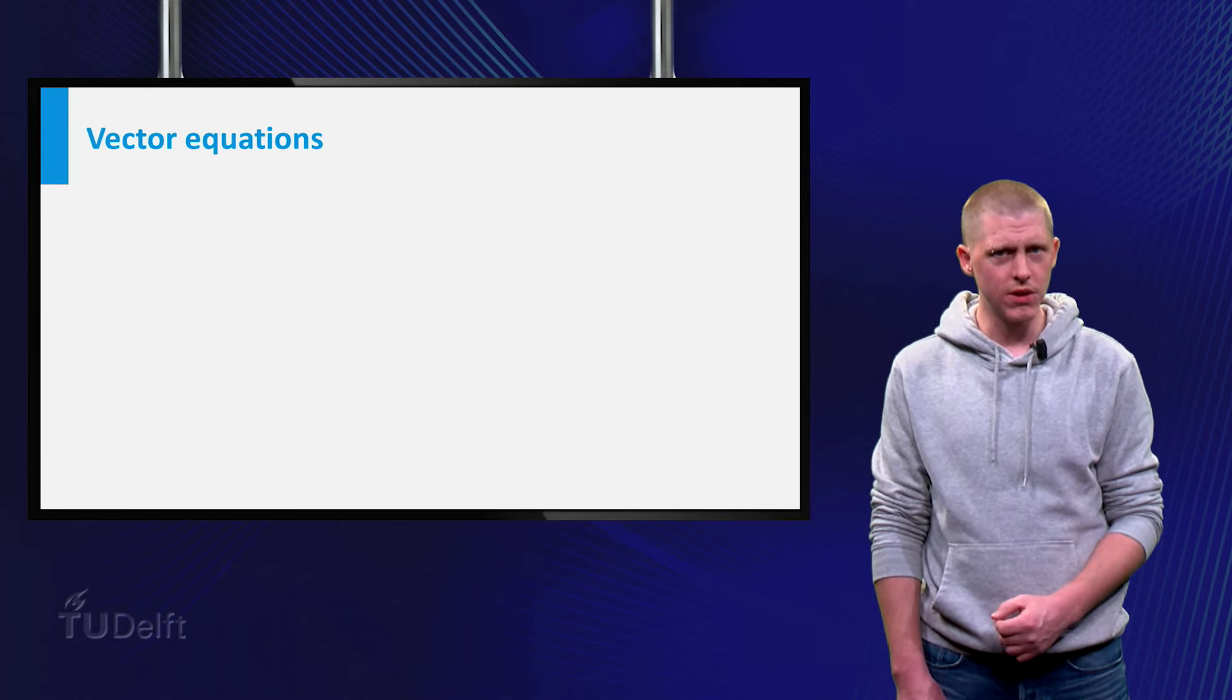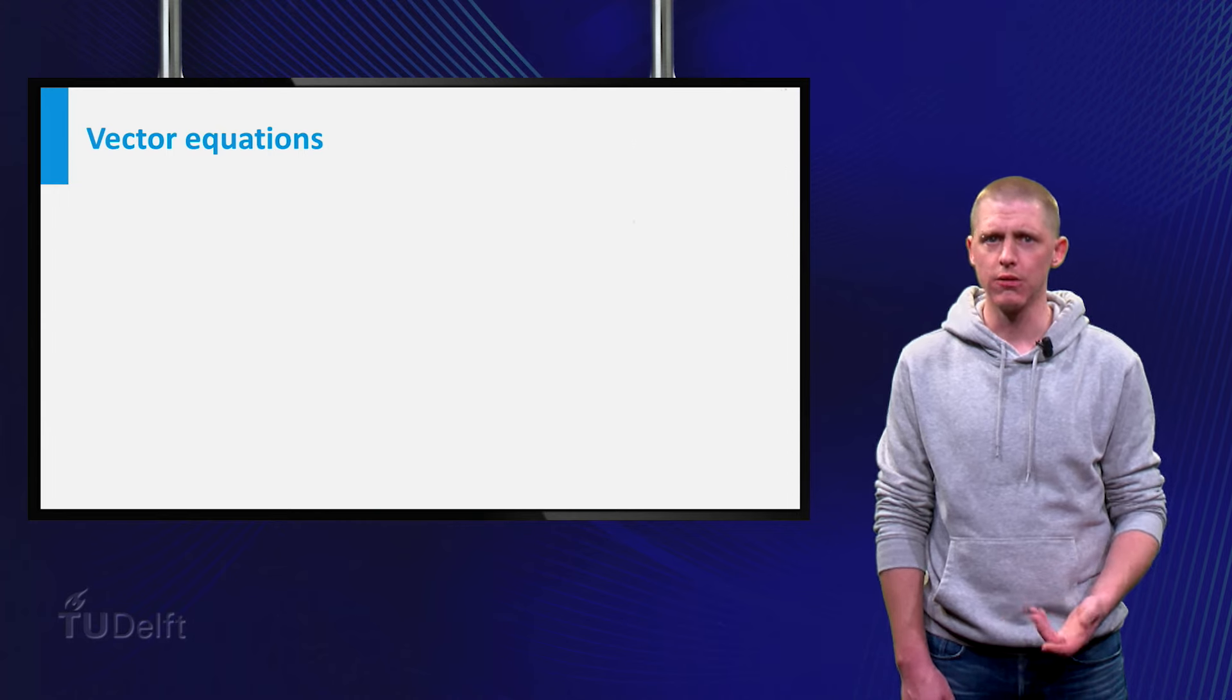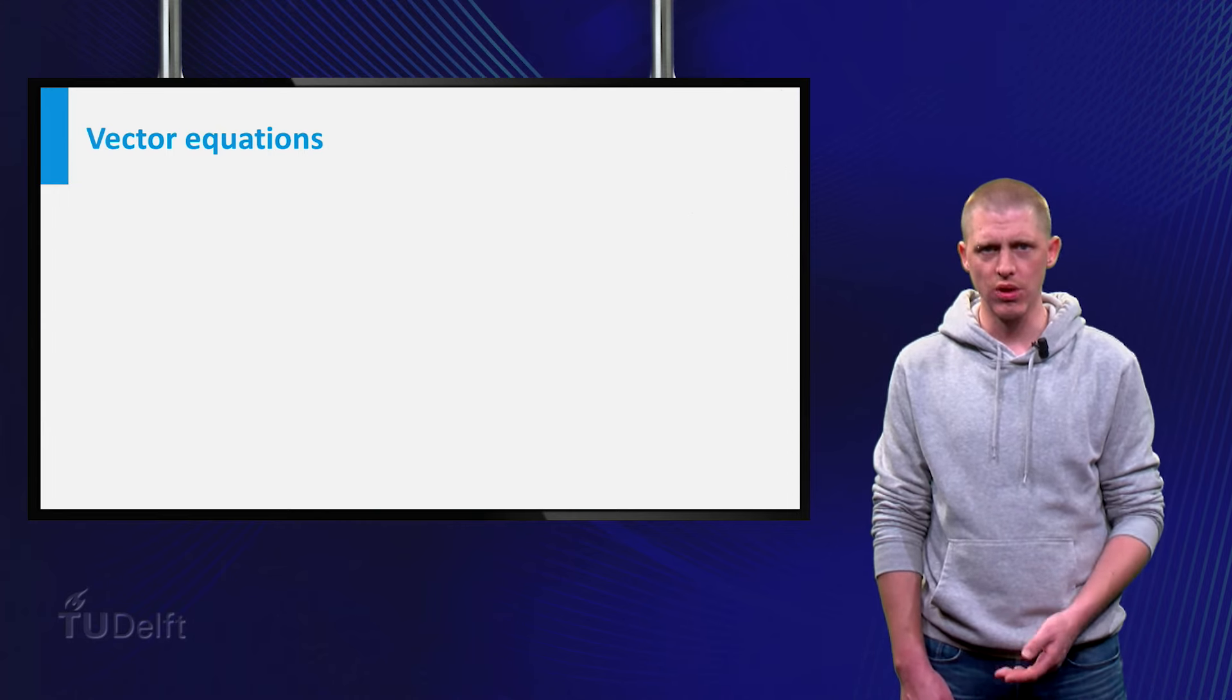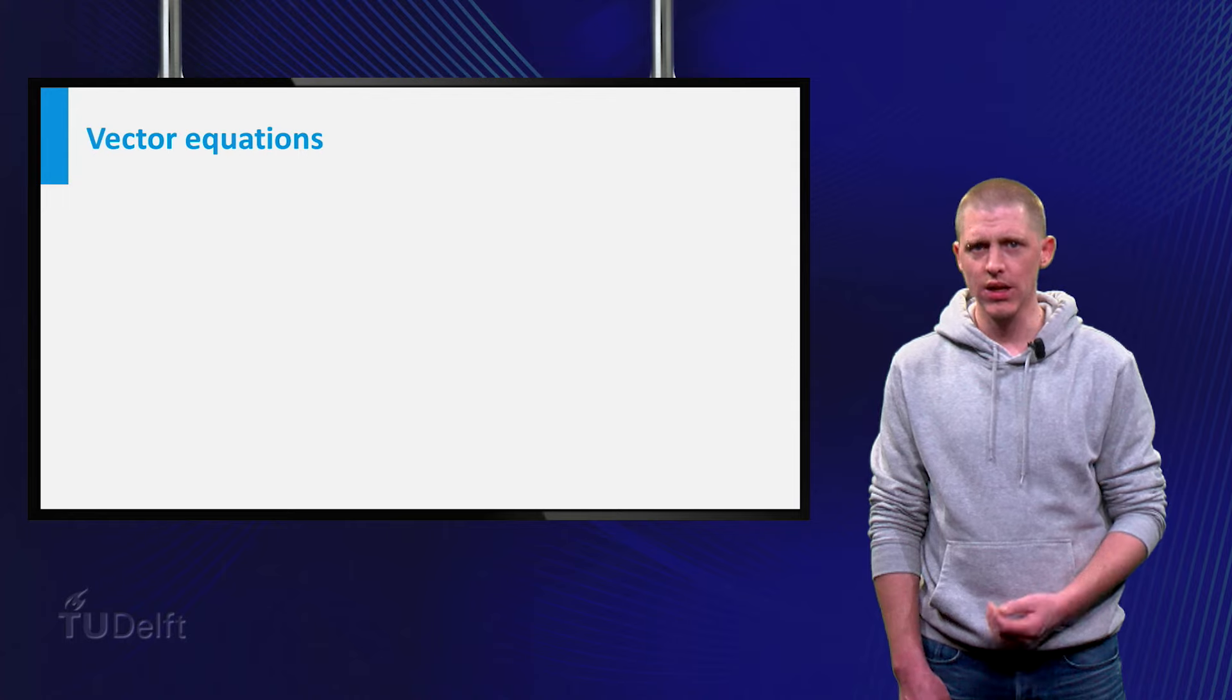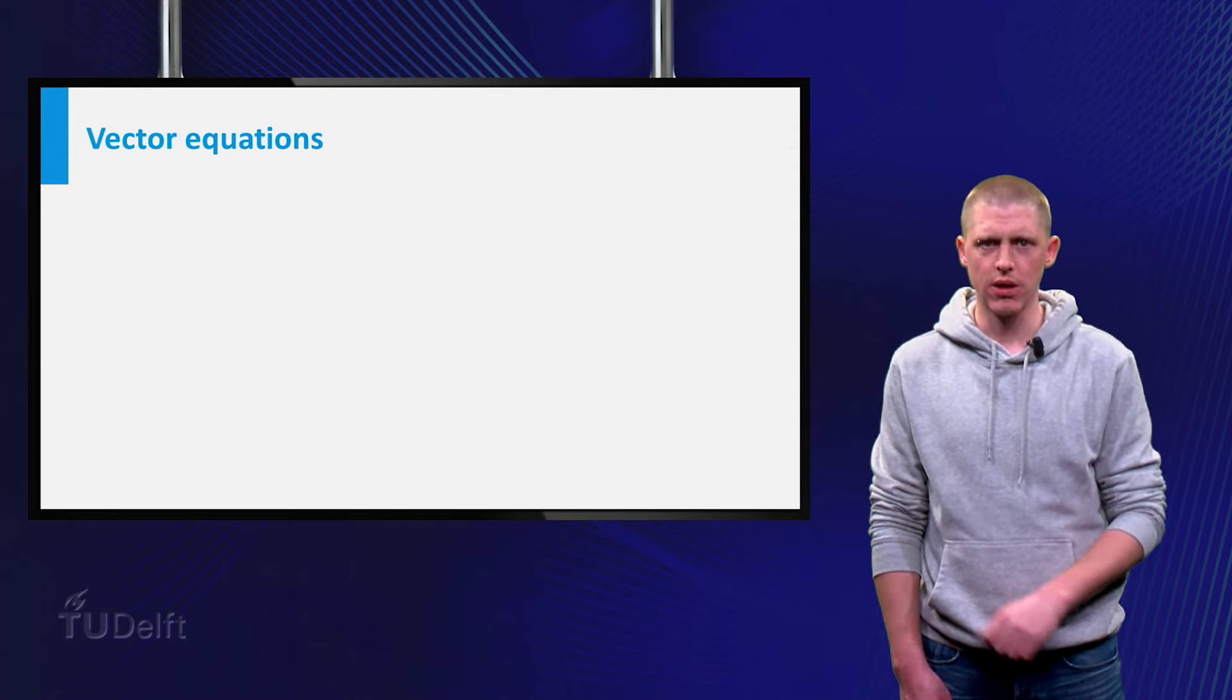Let us revisit the question we posed at the beginning of the video. Can we write a linear system with more than three equations as a vector equation and vice versa?